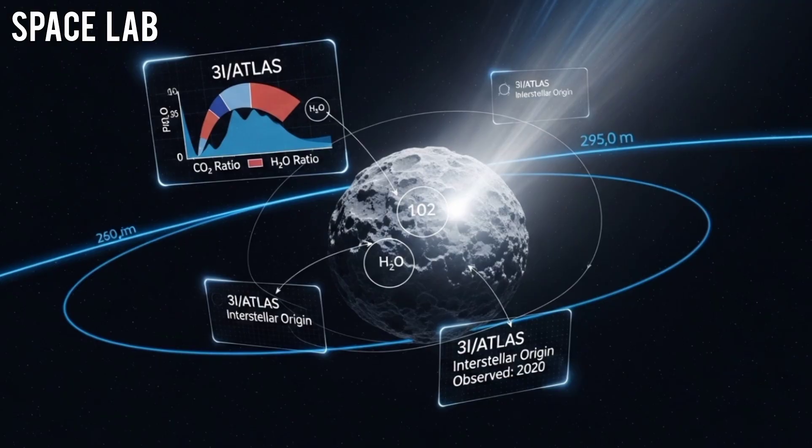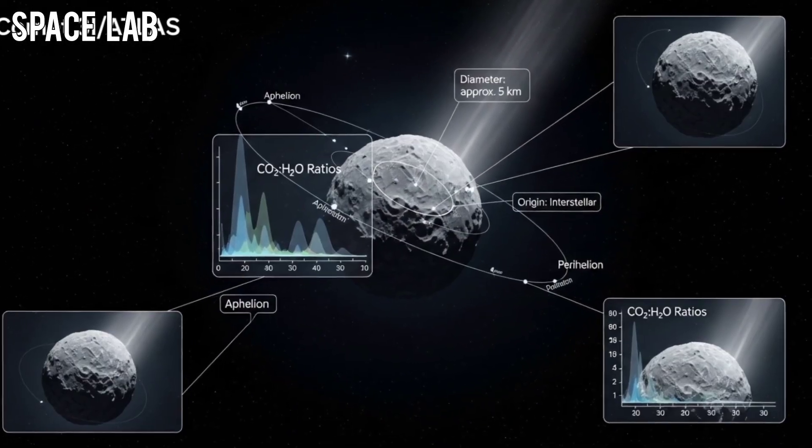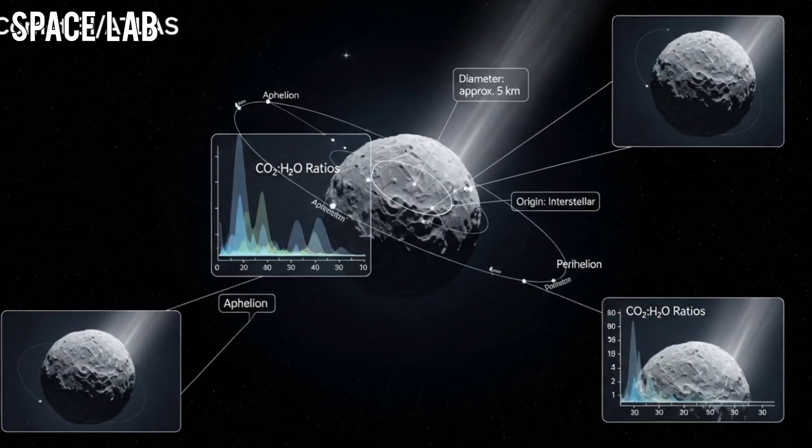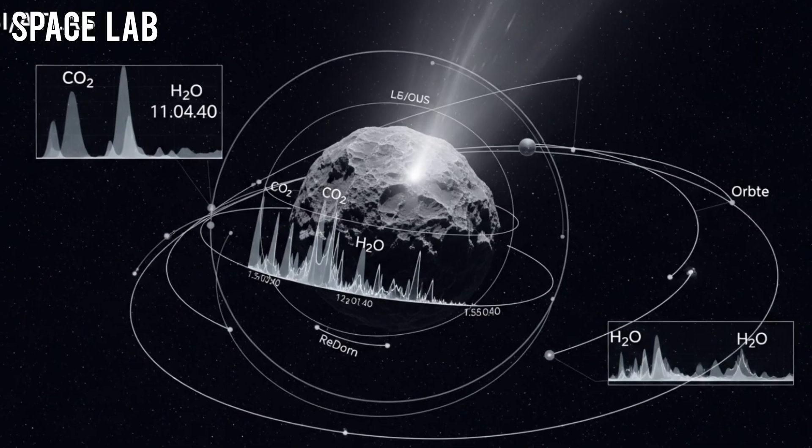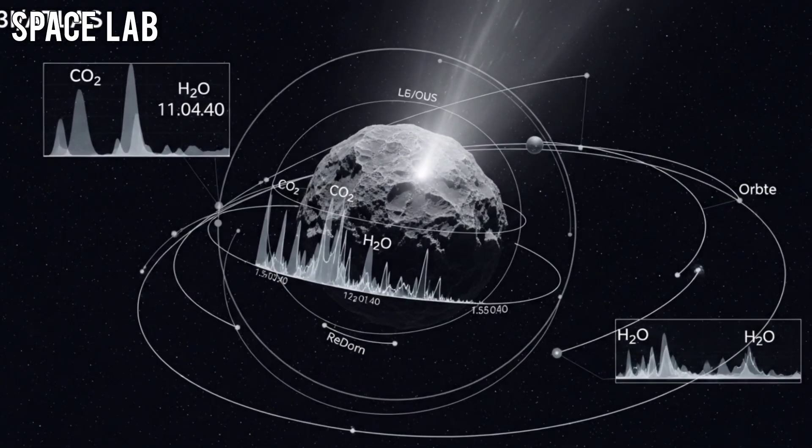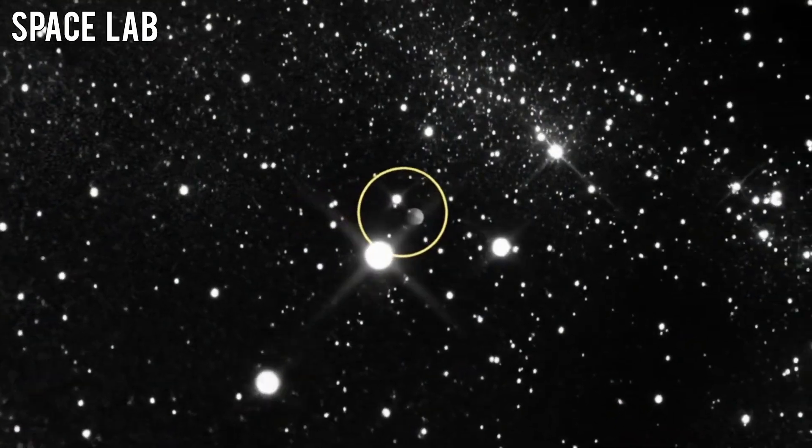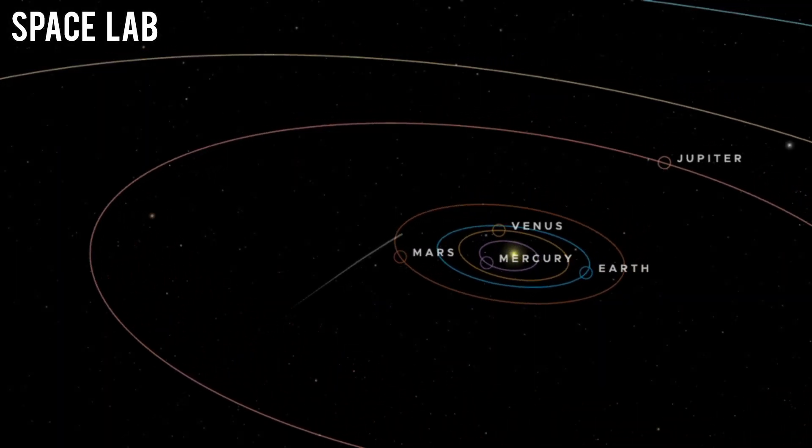The data came in waves from multiple satellites. The Mars Reconnaissance Orbiter, ESA's ExoMars Trace Gas Orbiter, and even China's Tianwen-1 mission all recorded the same phenomenon. For nearly 420 seconds, 31P ATLAS hovered in a stable position relative to Mars, its rotation slowing to almost zero.